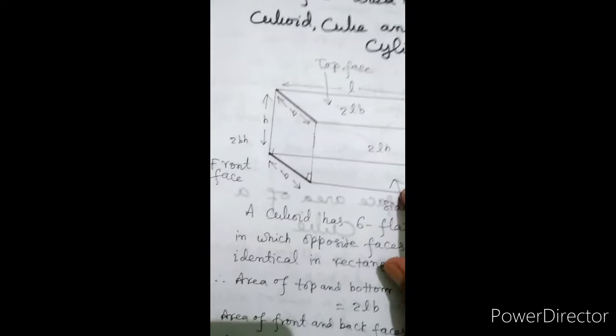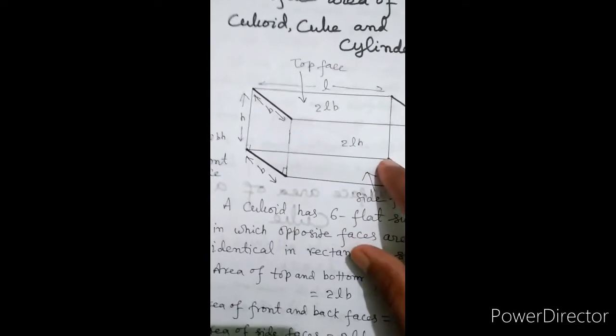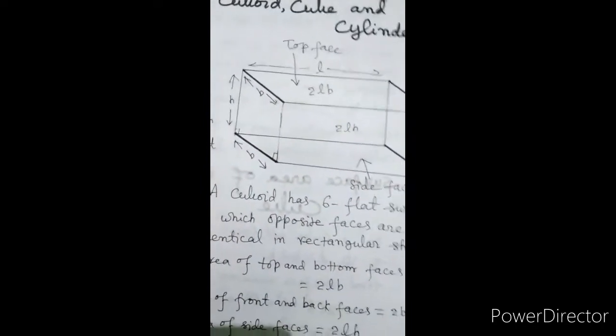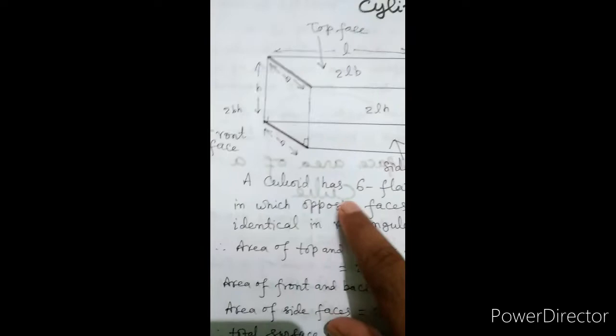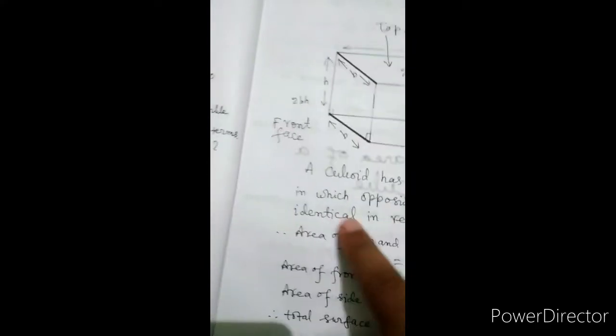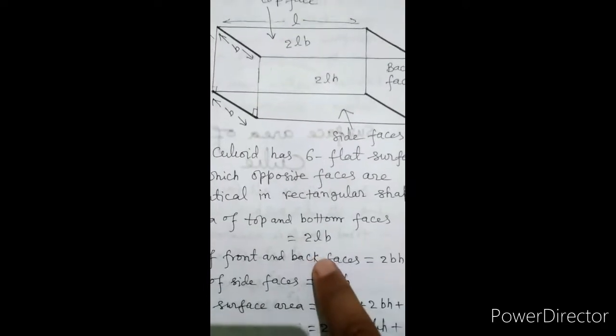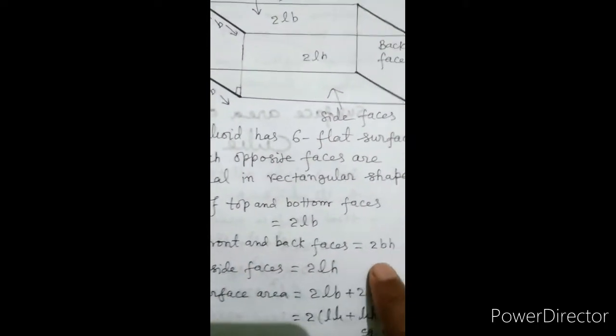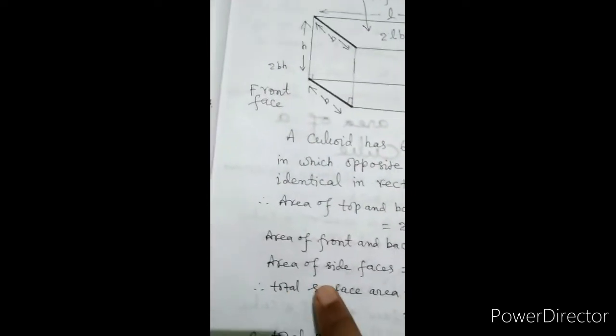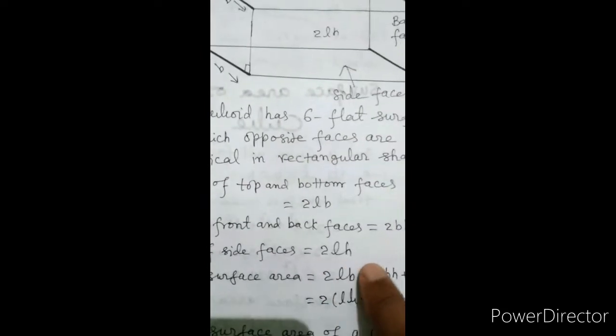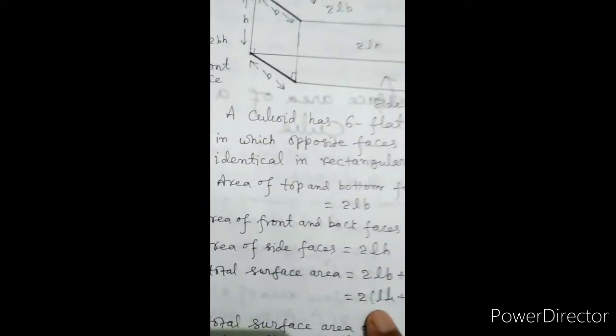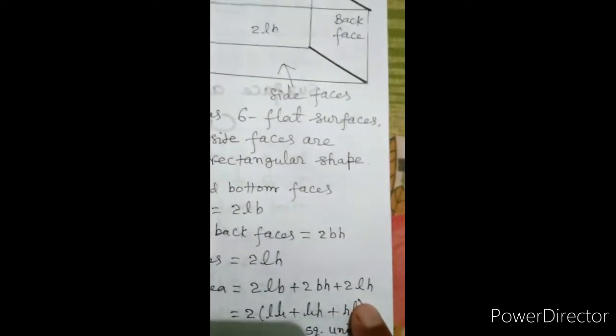In this way, we have to find the total surface area of this 3-dimensional cuboid. It has 6 rectangular faces. A cuboid has 6 flat surfaces in which opposite faces are identical in rectangular shape. Hence, area of top and bottom faces is equal to 2LB, area of front and back faces is equal to 2BH, area of side faces is equal to 2LH. In this way, total surface area is equal to 2LB plus 2BH plus 2LH square units.